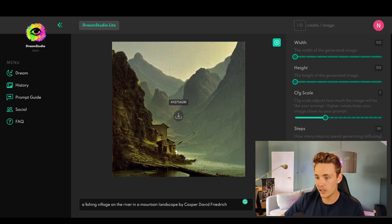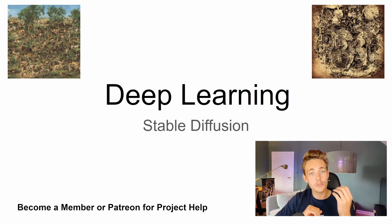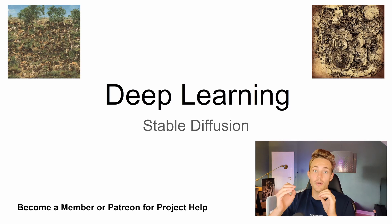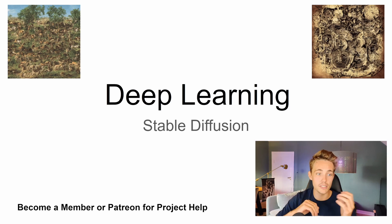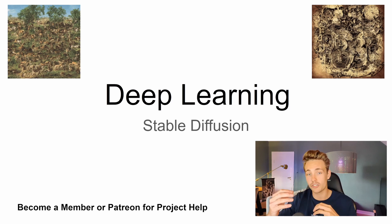Hey guys and welcome to a new deep learning video. In this video we're going to talk about stable diffusion. We're going to take a text prompt, pass it through the stable diffusion model, and then look at the results where we generate images with an AI model. Up at the top left and top right corners we can see two examples of outputs from the stable diffusion model. We'll look at demos and I'll show you in code how we can set it up, pass in a prompt, and save our AI generated image.